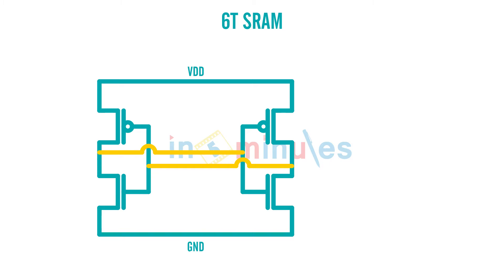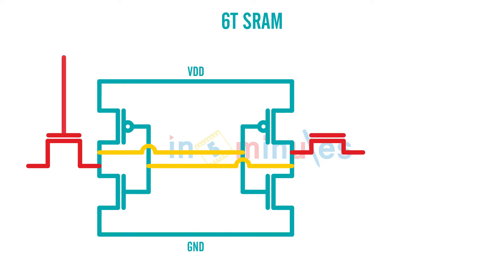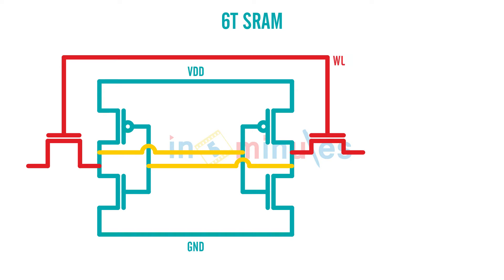We also discussed that at the output there will be an NMOS transistor, and the gates of both the NMOS transistors would be shorted and we would call it the word line. We also drew bit and bit-bar lines — this was bit and this was bit-bar.